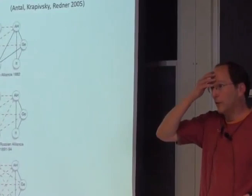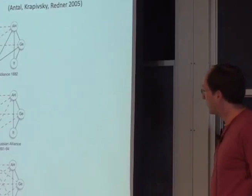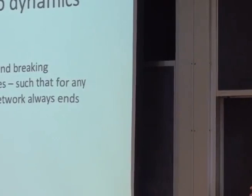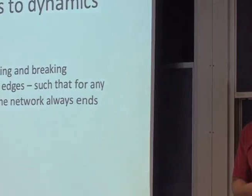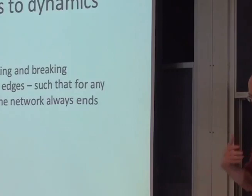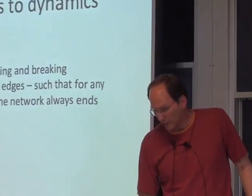Now the question is: what's going on dynamically? Can we develop a dynamical theory of how different triangles change their edges? Moving from statics to dynamics, can we figure out a rule for changing edges — pluses to minuses and vice versa — with the goal that for any initial sign configuration, the system always evolves to a fully balanced state? If that's too ambitious, we might settle for a rule where the probability of reaching balance approaches one as the size of the network goes to infinity.